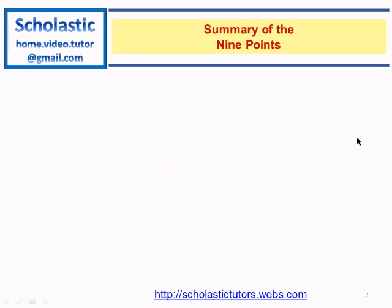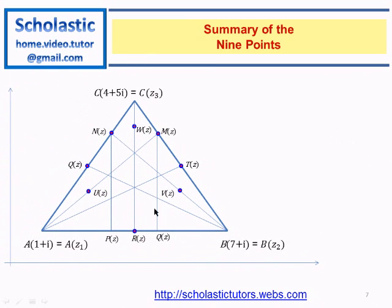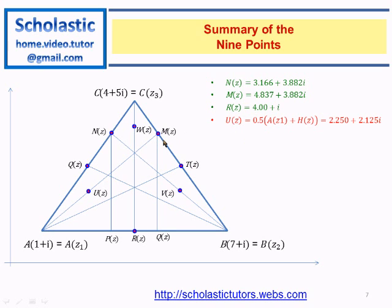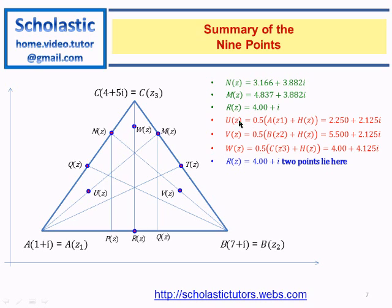So we have nine points. Three midpoints of the sides of the triangle, the feet of the altitudes, and the center. In fact we have eight distinct points because two of them coincide here at R. N is found, M is found, R is found. U, V, and W we found earlier, and these are the feet of the altitudes and the midpoints of them.